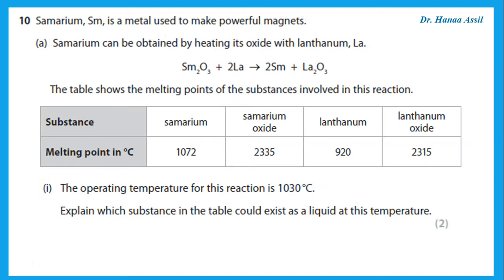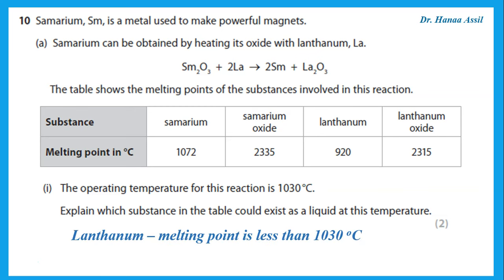Samarium is a metal used to make powerful magnets. Samarium can be obtained by heating its oxide with lanthanol. The table shows the melting points of the substances involved in this reaction, and the operating temperature is 1030 degrees Celsius. Explain which substance could exist as a liquid at that temperature. The one with a melting point lower than 1030 is lanthanol — that is the one that would have melted by the time we reach 1030 degrees Celsius.